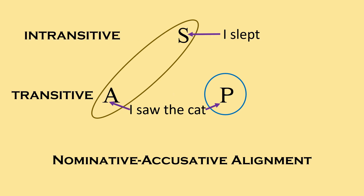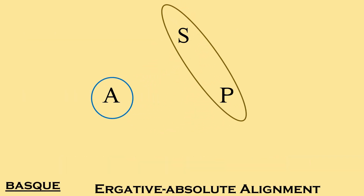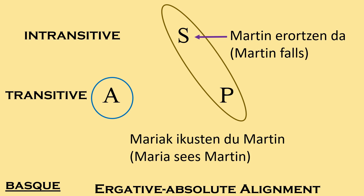However, in a language like Basque, it's different. The subject of an intransitive sentence — like 'I sleep,' 'I fall,' 'I walk' — is the same as the object of a transitive sentence. Then the agent of the transitive sentence takes on a case marker called the ergative. So in Basque, when you say 'Maria sees Martin,' Maria becomes 'Mariak' — with a K at the end — because she is the agent doing the action. That's the ergative case, and we're going to talk a lot about this.